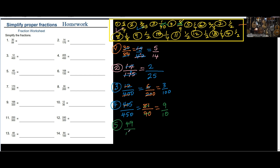Number 5 — we have 49 divided by 112. We're going to look for what number can divide both 49 and 112. We can use 7. 7 into 49 is 7 because 7 times 7 is 49. 7 into 112: 7 into 11 is 1 remainder 4, 7 into 42 is 6. So the answer is 7 over 16, and number 5 is incorrect.